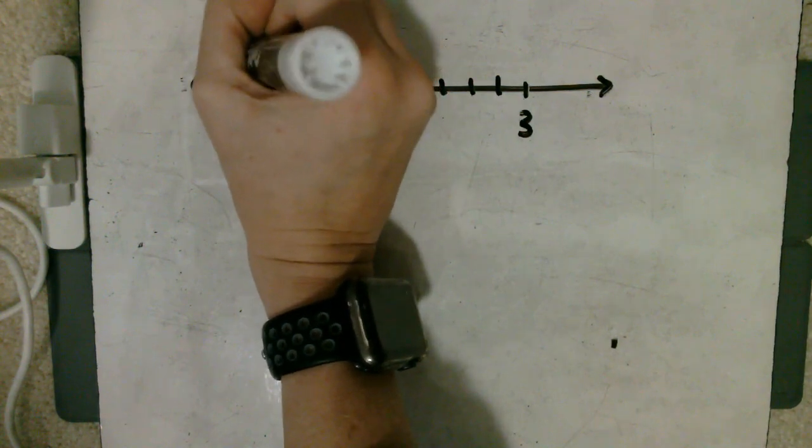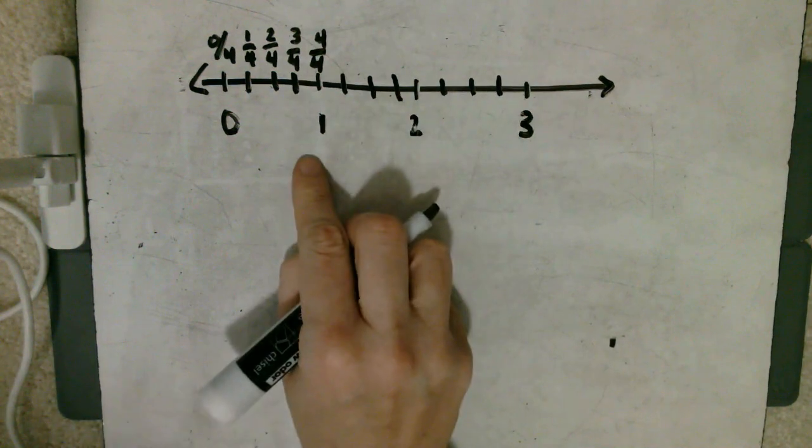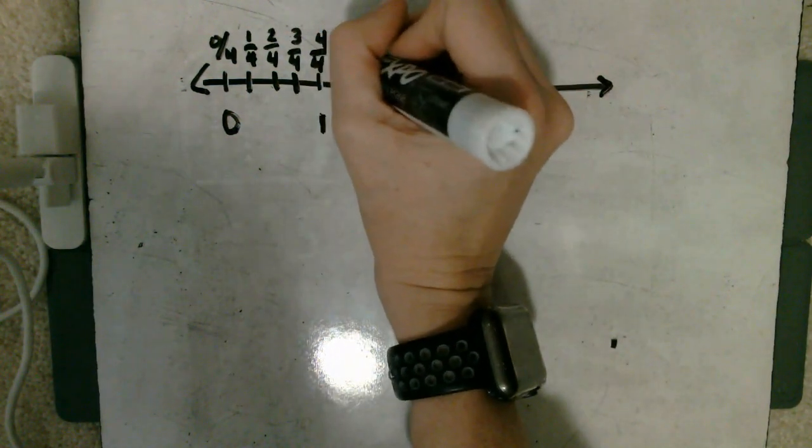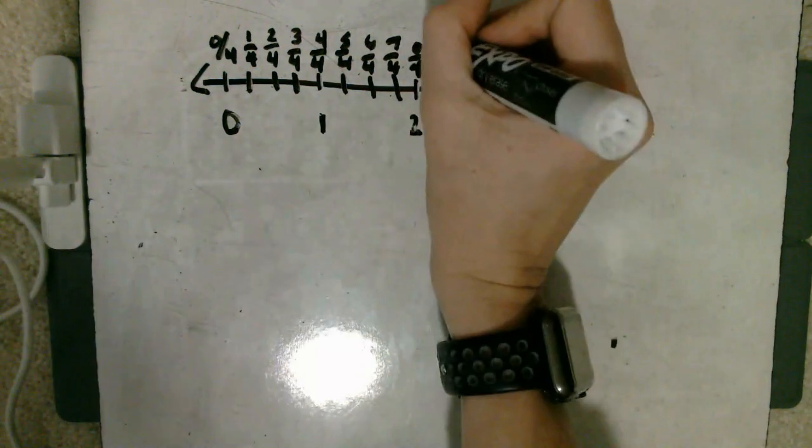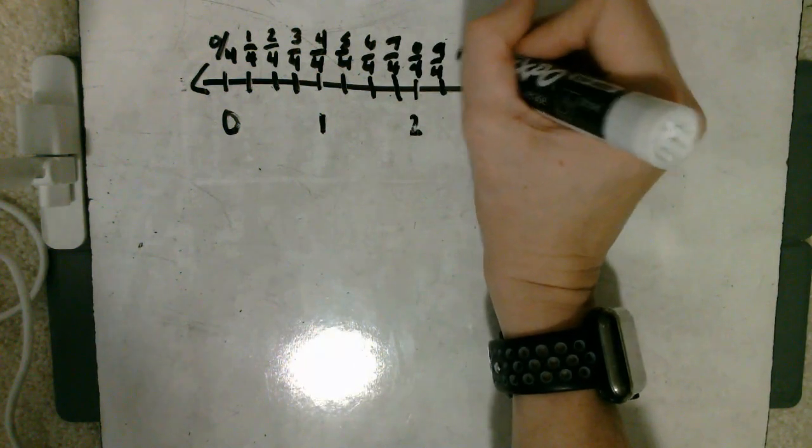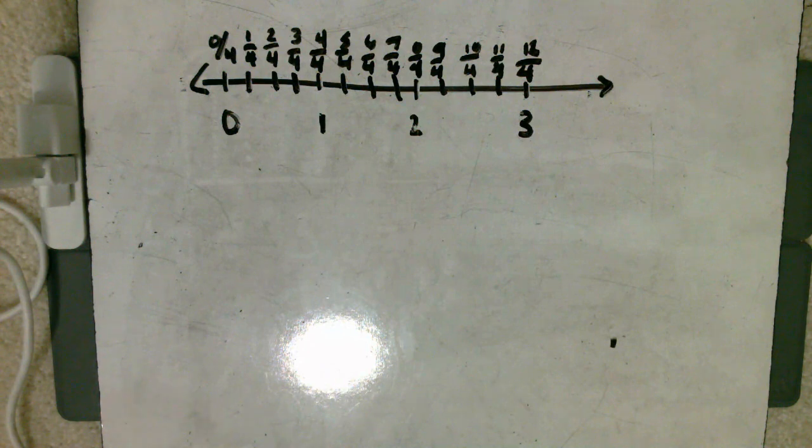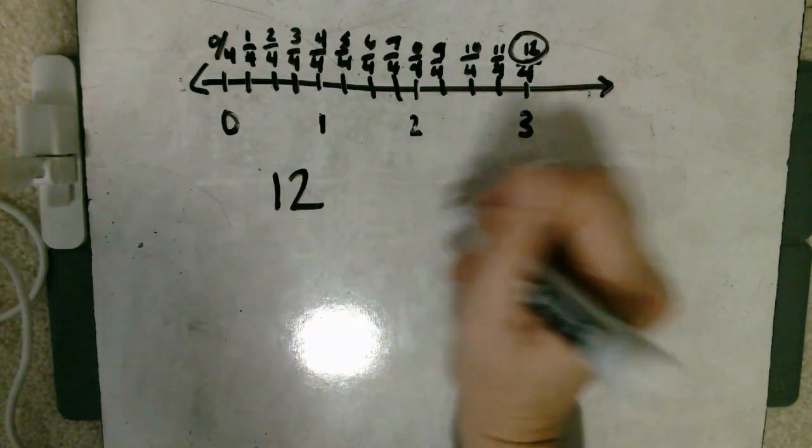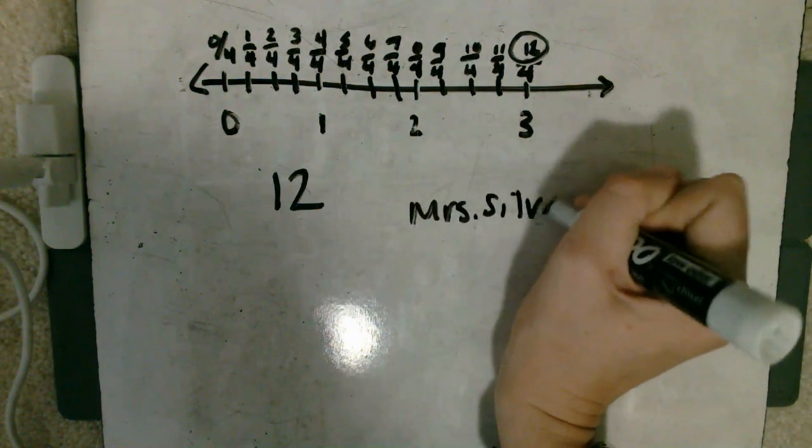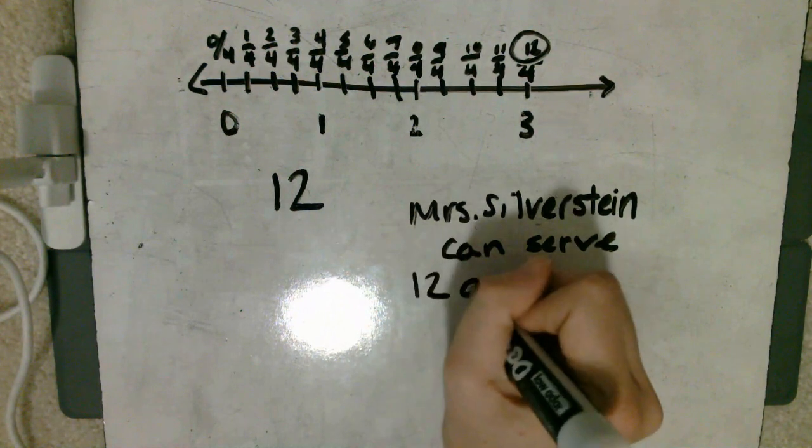Now let's count how many quarters we have. Zero quarters, then we have one quarter, two fourths, three fourths, and four fourths at one—that makes sense. Let's keep counting: five fourths, six fourths, seven fourths, eight fourths, nine fourths, ten fourths, eleven fourths, twelve fourths. Since each of the pieces of cake was cut into fourths and Ms. Silverstein wanted to serve her guests however many pieces of cake there were, we have to look at how many fourths we had. We had twelve fourths. That means that Ms. Silverstein, just like we said with our first method, can serve twelve guests.